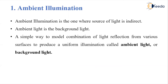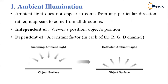First is ambient illumination. It is the one where the light source is indirect. Ambient light is nothing but background light — a simple way to model the combination of light reflections from various surfaces to produce uniform illumination. This light does not appear to come from any particular direction; rather, it appears to fall from all directions. As we can see in this figure, the ambient light falls on the object surface.